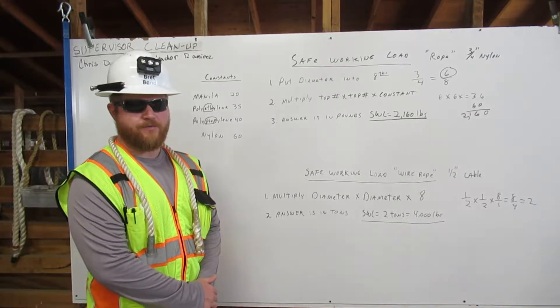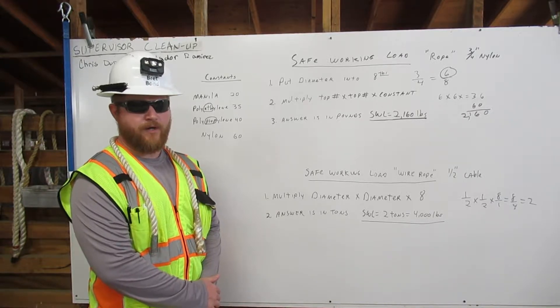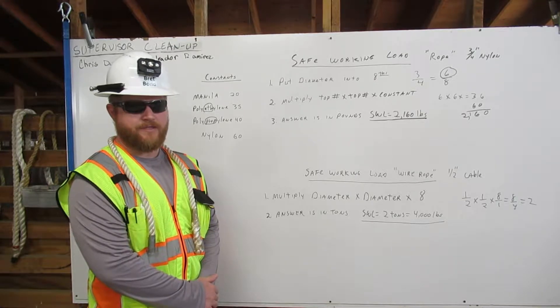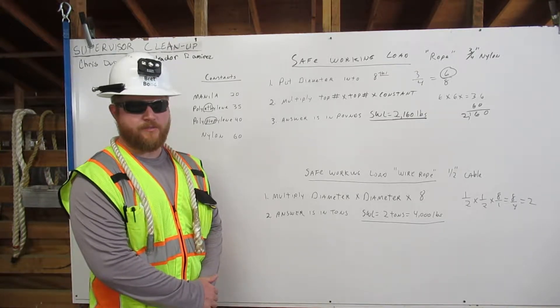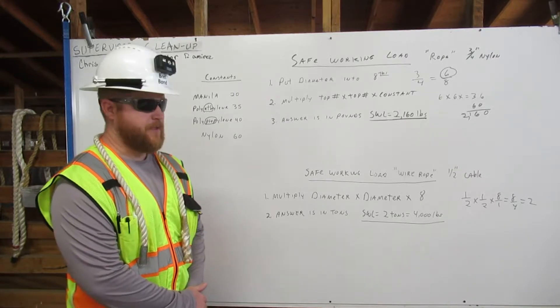I'm going to explain how to calculate the safe working load for rope and wire rope rigging. The safe working load is a number that represents one-fifth of the rigging's capacity. Let me explain.